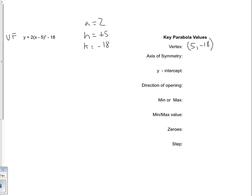My axis of symmetry is going to be when x is equal to 5. My direction of opening is going to be up because my a value is positive 2. That means it's going to have a minimum value, and my minimum value is actually going to be when the y value is negative 18, and my step is actually going to be 2.